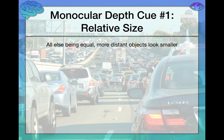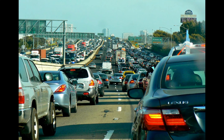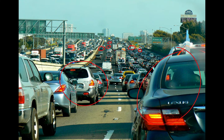The first monocular cue is relative size. All else being equal, more distant objects tend to look smaller than objects that are closer to us. Looking at this scene of a busy, traffic-filled highway: take a look at the Lexus and the car nearby — they take up a lot of our visual field because they're very close to us. The cars further out in the background take up very little space on our visual field. Our brain uses this information to determine that those cars must be further away.